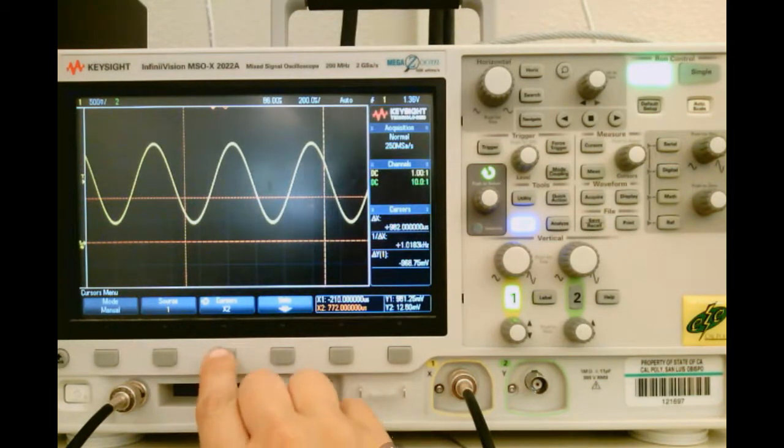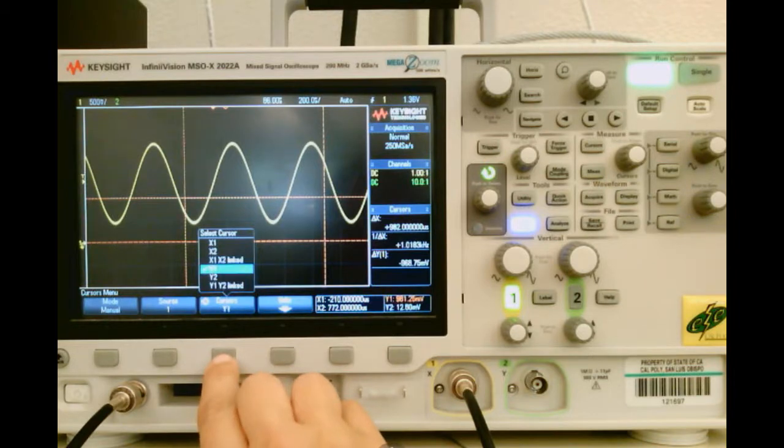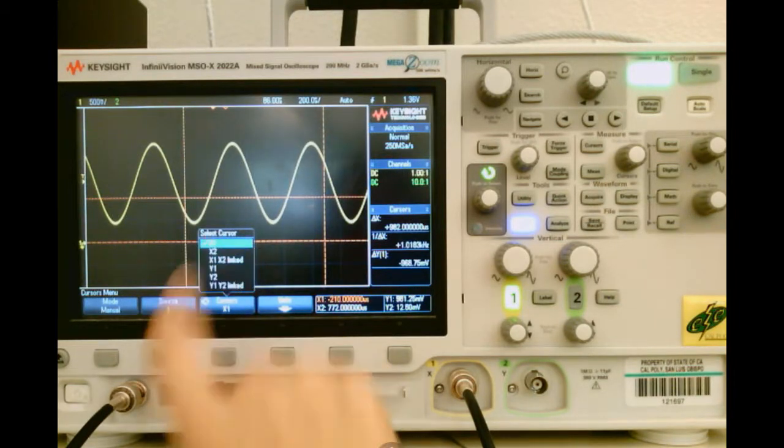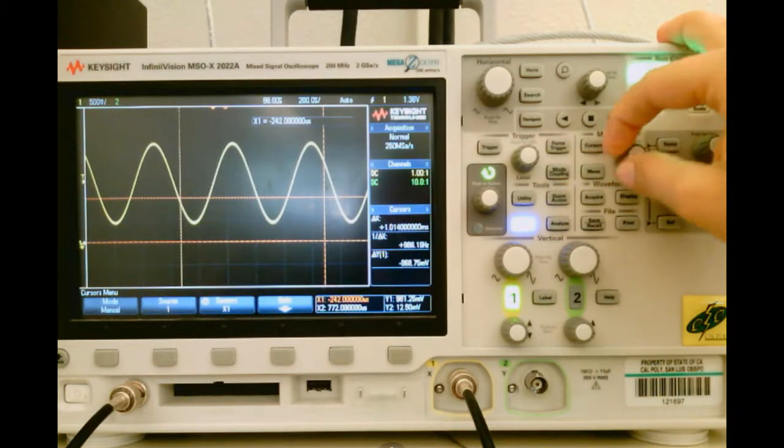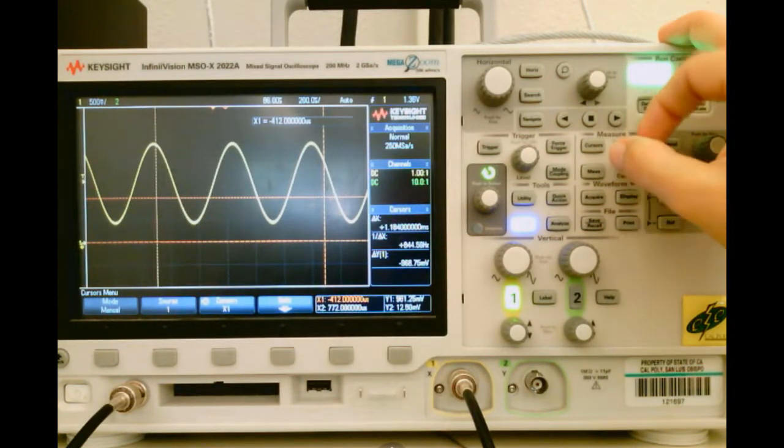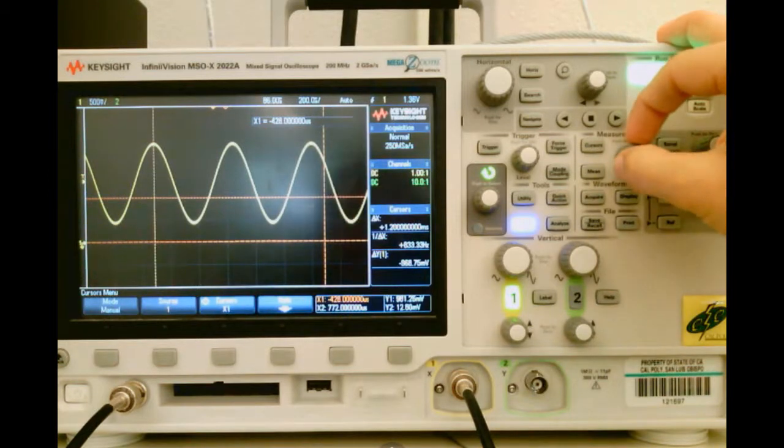So let's go ahead and move the first cursor, which you can change the cursors you're using. Let's pick X1. Now use the Cursors knob to move that cursor to the peak of your waveform. So that looks like it's about at the peak.